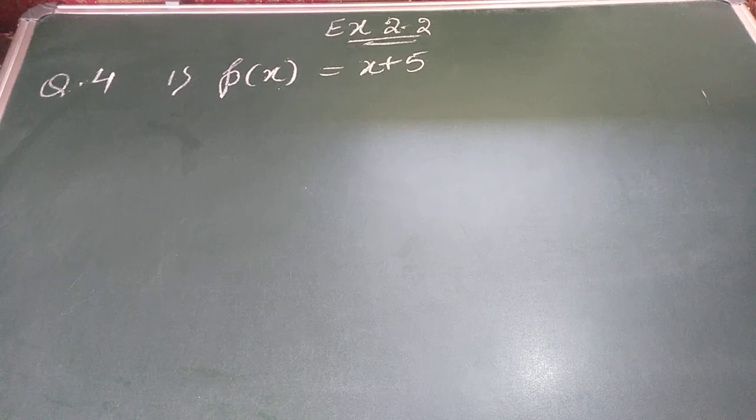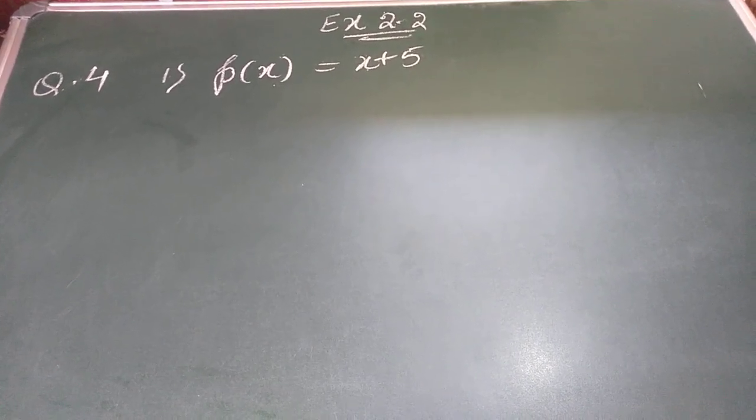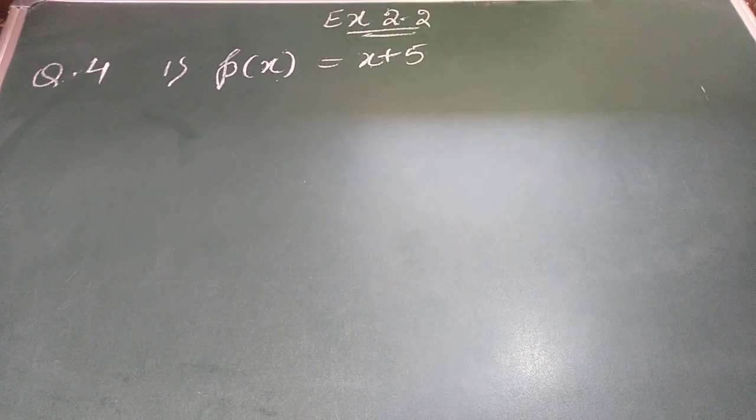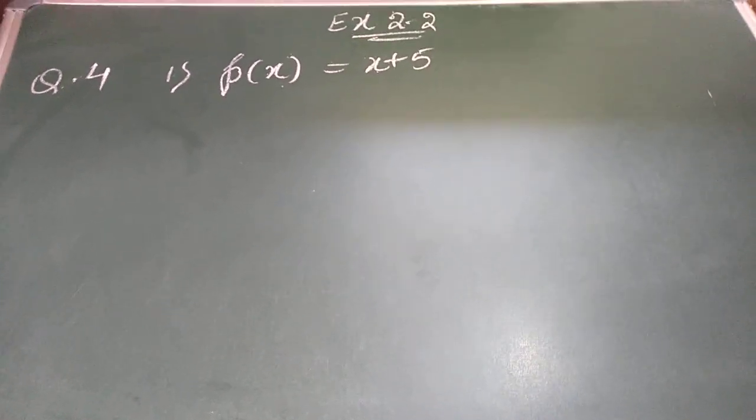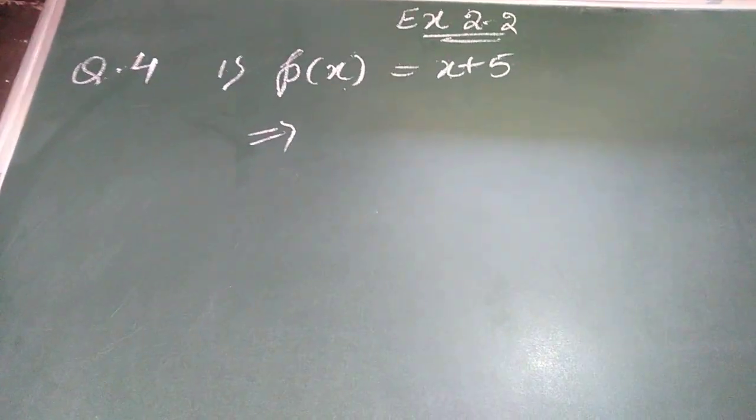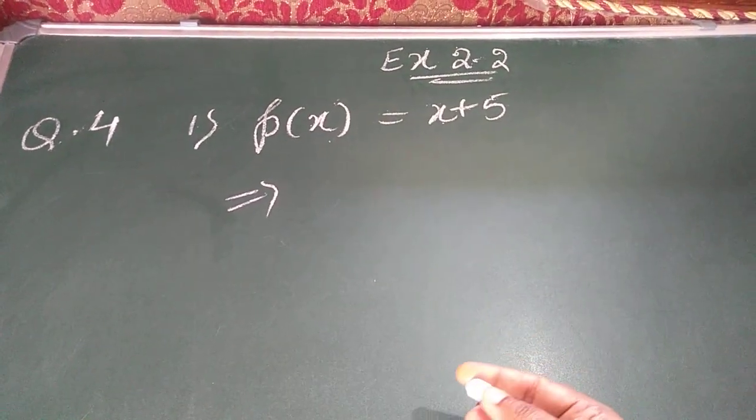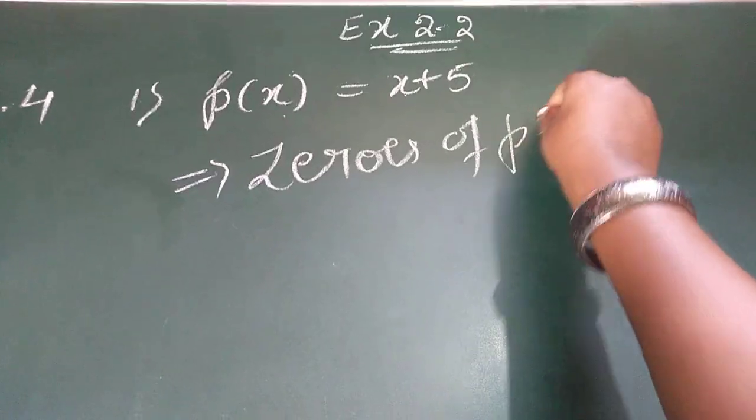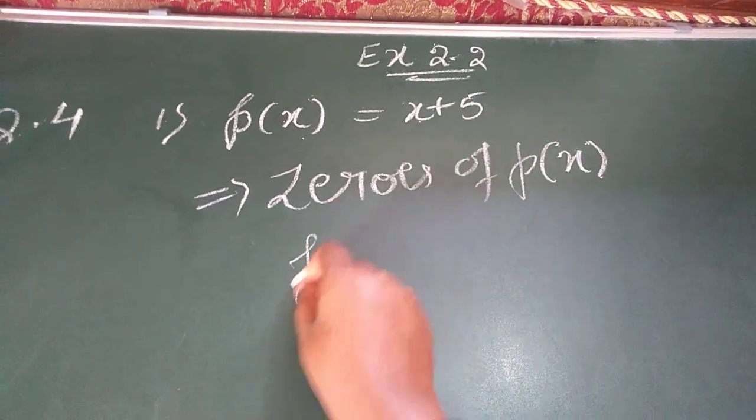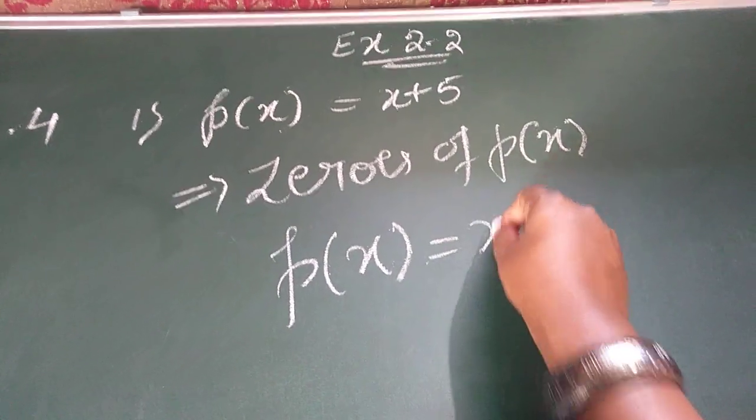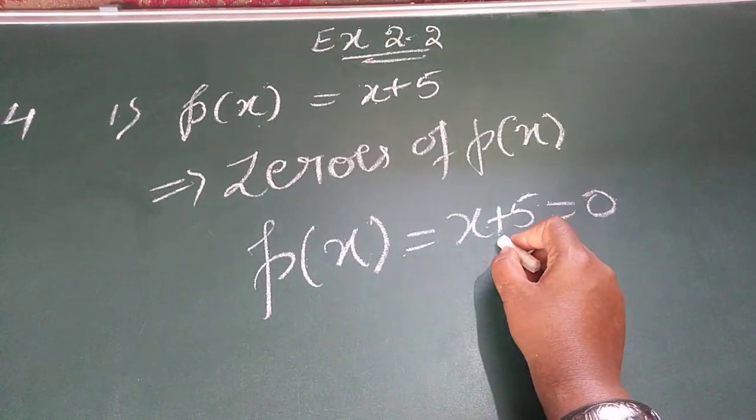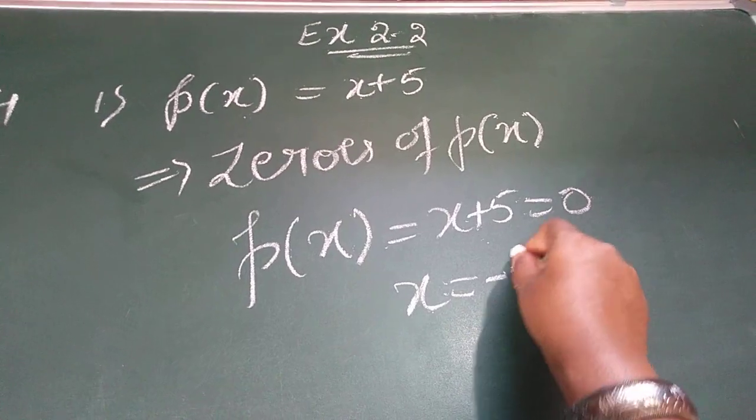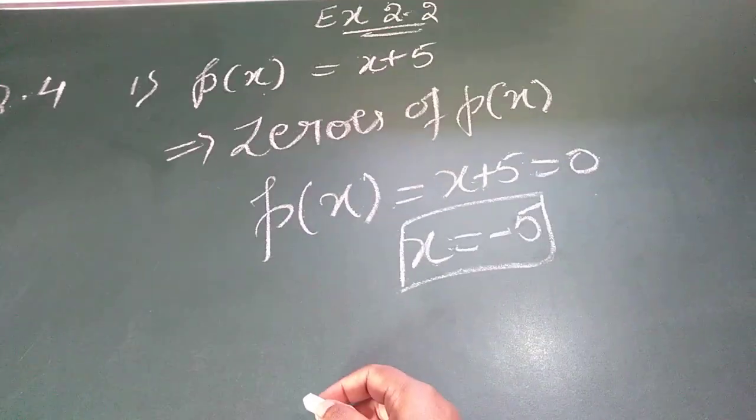Now, today I am going to solve question number 4, which is regarding finding all the zeros of the given question. There are two ways to find the zeros, children. Number one, first way is you can directly find zeros of P(x). That means P(x) equals x plus 5 equals 0. When this 5, it is plus symbol, if it goes to the other side, it will become minus 5 directly, or else it is a linear equation.